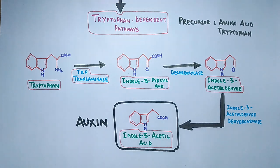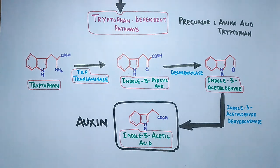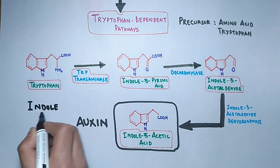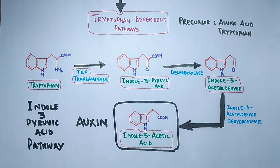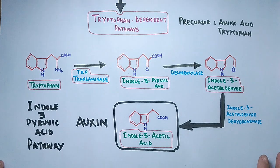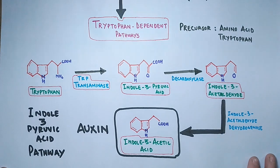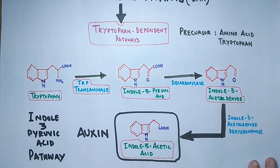This is how auxins are synthesized in plants via the tryptophan-dependent pathway. There is also a tryptophan-independent pathway for auxin synthesis, which skips the tryptophan molecule and uses indole and indole-3 glycerol phosphate as precursor molecules instead.